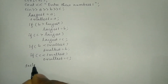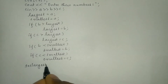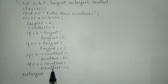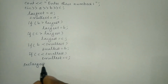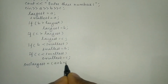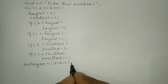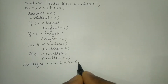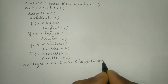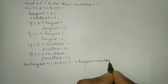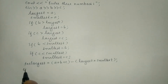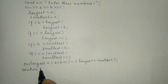Now we are going to check for the second largest. I'm going to write: sec_largest = (a + b + c) - (largest + smallest). That formula gives us the second largest value, followed by a semicolon.